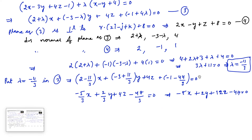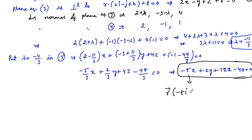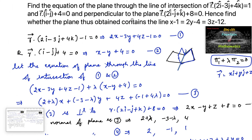This is the required equation of the plane, and it can also be written in vector form as r dot (-5i + 2j + 12k) = 47. Now we need to find whether the obtained plane contains the line x - 1 = 2y - 4 = 3z - 12.